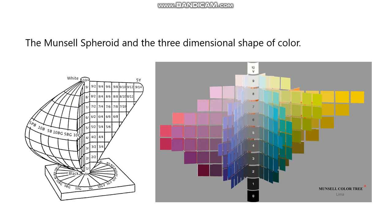An older model is the Munsell color diagram — or color spheroid, or color tree — and it tries to understand the shape of color in three dimensions. Going back to our first lecture on color, we talked about the fact that color has three characteristics: hue, intensity, and value. If it has three characteristics, it really needs a three-dimensional model to show how all those three characteristics interrelate. So what you can do is chart out color that way, where for each hue you make a separate chart.